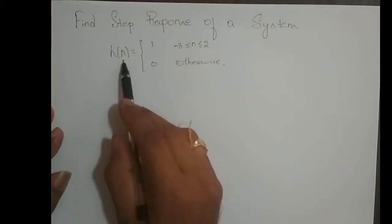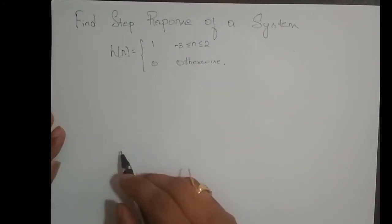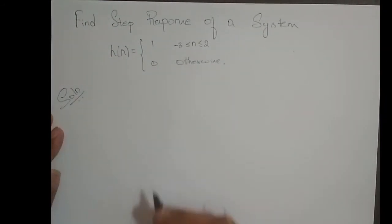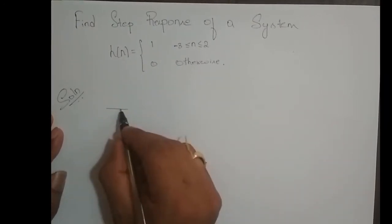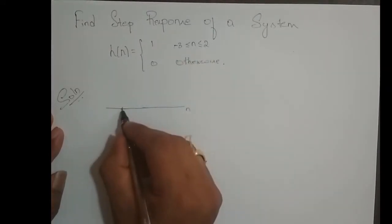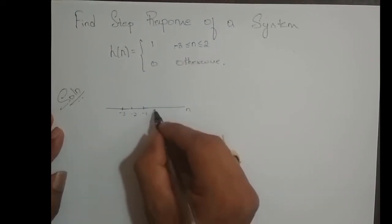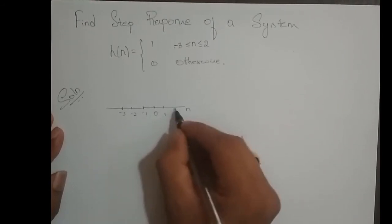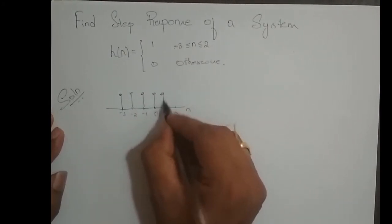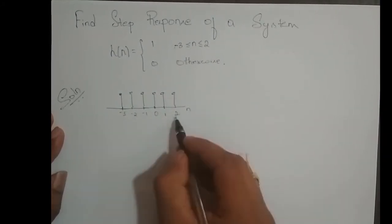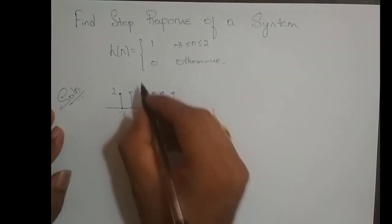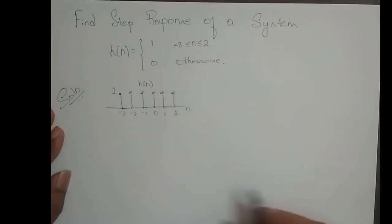I have a system with impulse response H of n and I need to find its step response. First, let me sketch this impulse response H of n. So n varies from minus 3, minus 2, minus 1, 0, 1, 2. What is its amplitude? It is 1 everywhere — from n varying from minus 3 to 2, and equal to 0 otherwise. This is the impulse response; it represents the system.